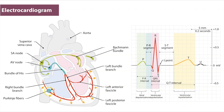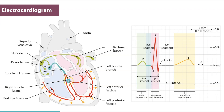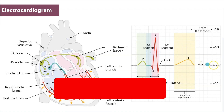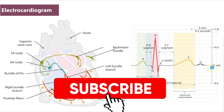In ventricular tachycardia there's an ectopic foci or foci. Instead of the impulse originating from the SA node, there's a troublemaker firing when it shouldn't be, causing the impulse to fire prematurely and throwing off the electrical impulse of the heart.